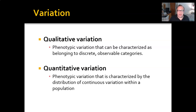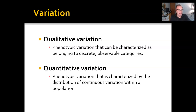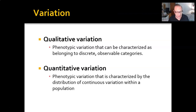Quantitative variation is measurable in those kinds of terms — weight, height, even colors expressed along a gradient would be quantitative, because you could measure the amount of reflected light. That's true of skin color. We can measure skin reflectance — the amount of light reflected off the surface of the skin versus the amount absorbed. That's a measure of skin tone, and what we always find is a standard distribution curve.